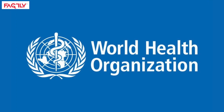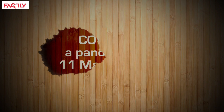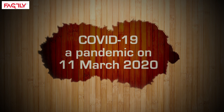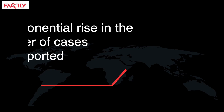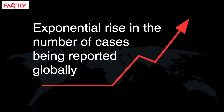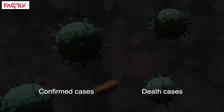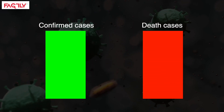The World Health Organization declared COVID-19 a pandemic on 11 March 2020, following an exponential rise in the number of cases being reported globally. Even now, confirmed cases and deaths are constantly on the rise.